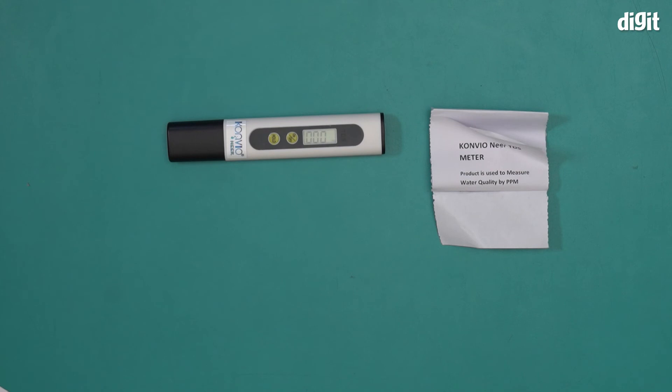And this is it. This is what you'll find inside the box containing the Conveo near TDS meter. Thank you for watching.